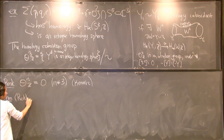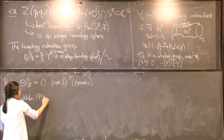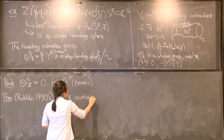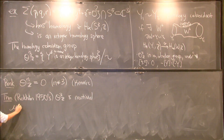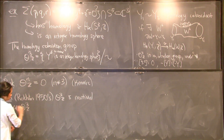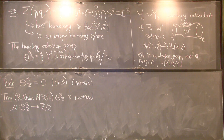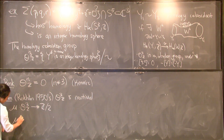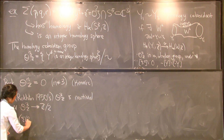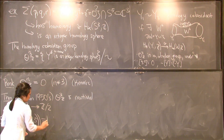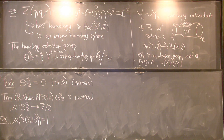We know that θ³_Z is a non-trivial group, due to the existence of a homomorphism called the Rokhlin homomorphism from θ³_Z to Z mod two. Rokhlin constructs a surjective homomorphism to Z mod two, which tells us this group is non-trivial. For example, the Rokhlin invariant of σ(2,3,5), one of these Brieskorn homology spheres, is equal to 1 mod two. And σ(2,3,5) has a special name — it's known as the Poincaré homology sphere.